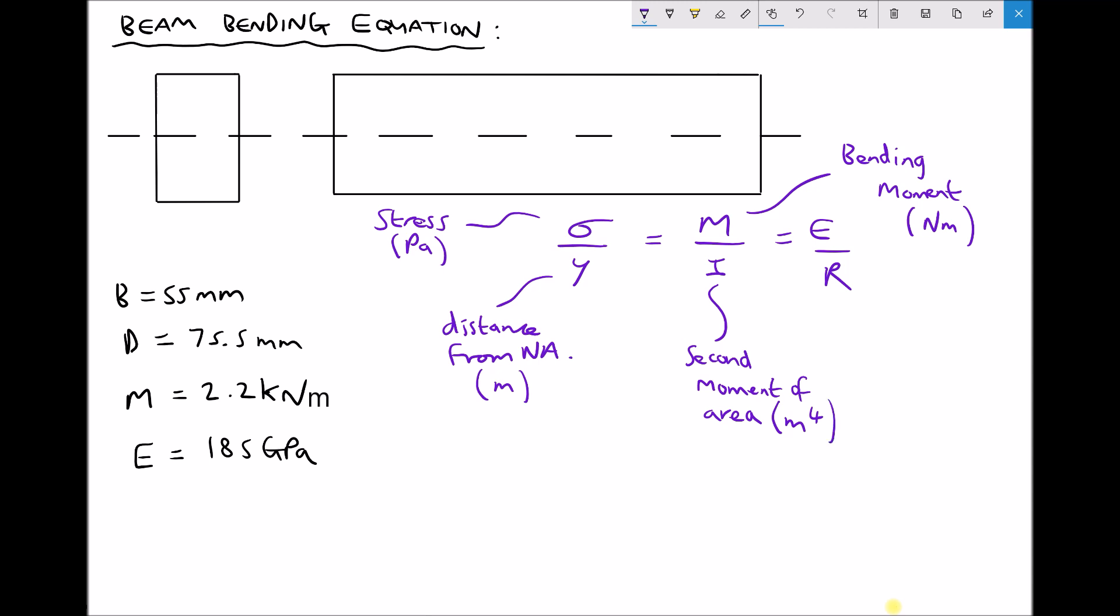Now the reason we use second moment of area is, as we explained before, the stress isn't evenly distributed across the beam. We have our elastic modulus, which is a property of the material. That's also measured in pascals.